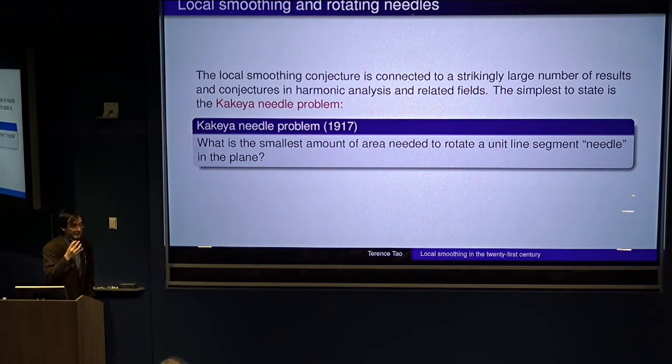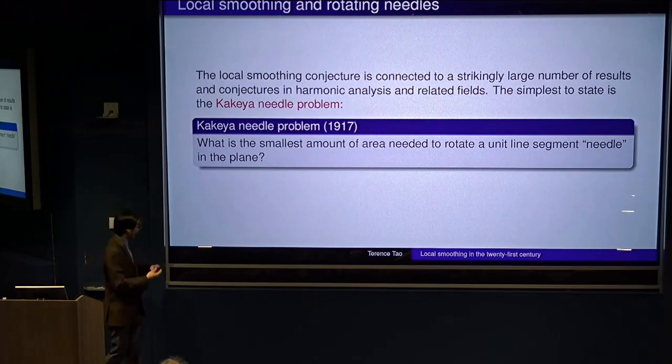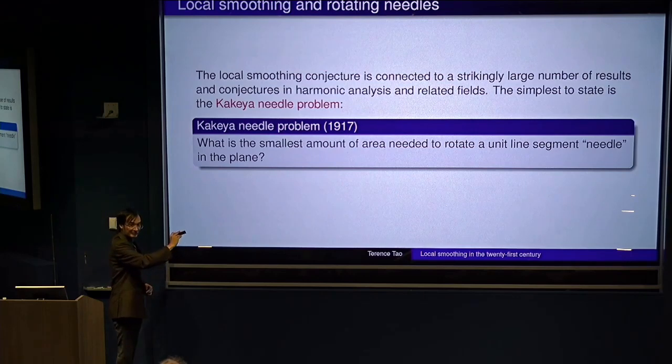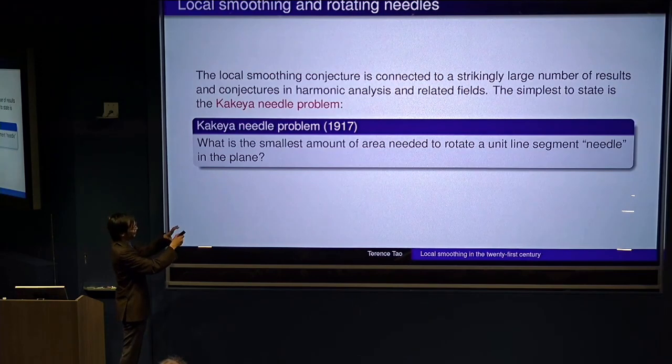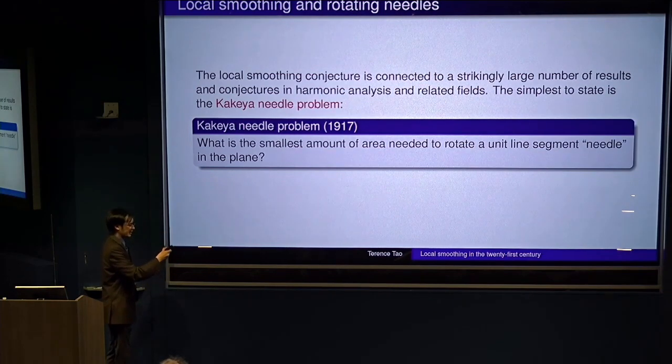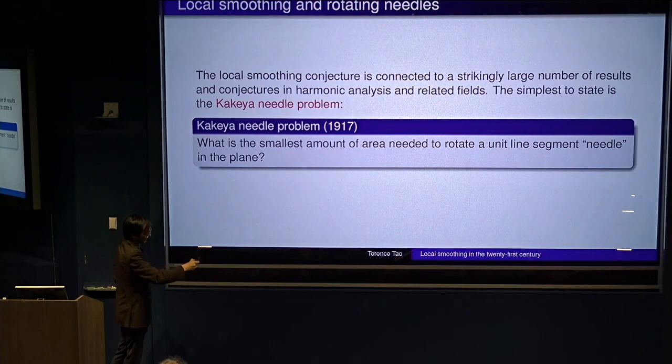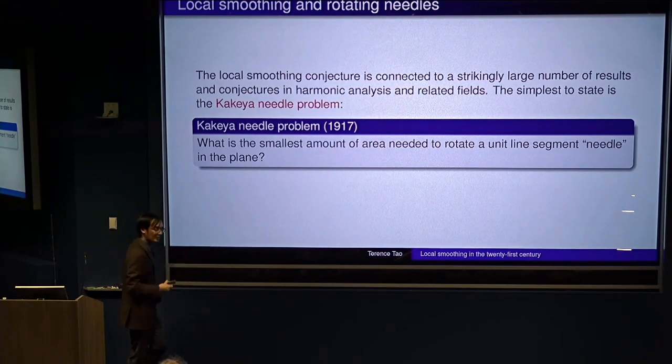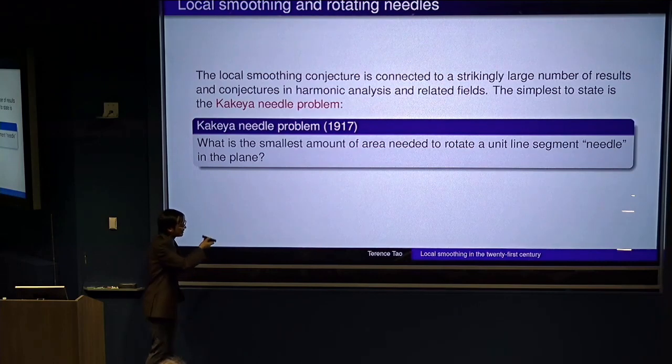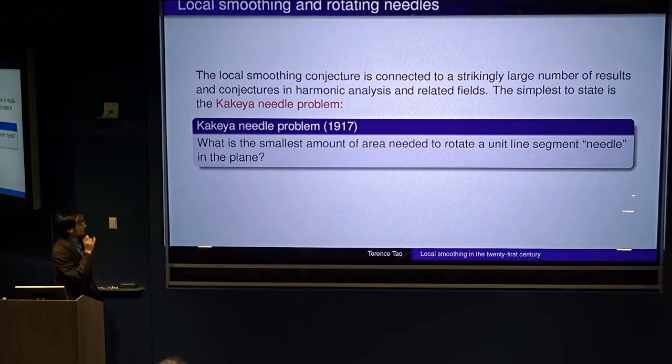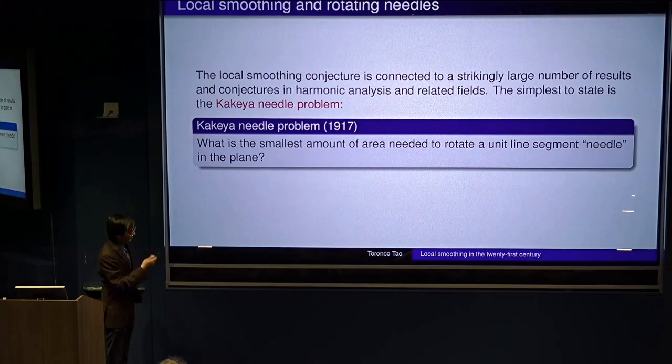So this is the following problem. If you take a unit needle in the plane, and you want to turn it around by 180 degrees, you want to rotate the needle in the plane, the question is, what's the smallest amount of area you need in order to turn the needle around? So, you know, you could just turn it around in a circular motion, and that will give you, like, pi over four area or something. But, you know, just like if you want to get a tight parking spot, you can maybe try to do a three-point U-turn or something. And you can move around what's called a deltoid shape, which actually is pi over eight area, rather than pi over four. You can conserve some area by being smarter with your parallel parking.